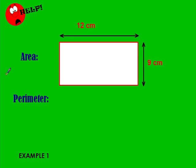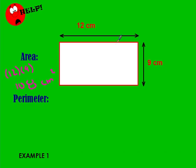So this one, you're just going 12 times 9. 2 times 9 is 18, carry the 1 — 9 times 1 — so 108 centimeters squared. Then 12 plus 9 is 21, so that means our perimeter is going to be 42.